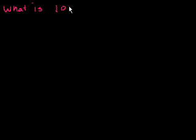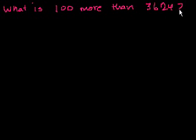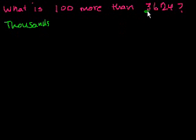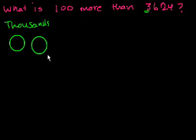Let's go back to some of the visual ways we were viewing these problems. What is 100 more than 3,624? You might want to pause it and try it yourself. I'm going to do it very visually — I'm going to draw the 1,000s place. How many 1,000s do we have? 3,624 — so let me draw 3 thousands.